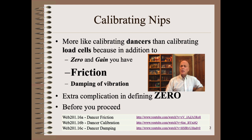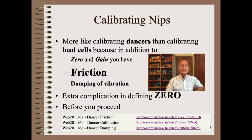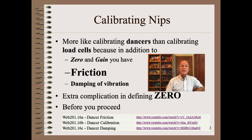Calibrating NIPs is more like calibrating dancers than calibrating load cells. The reason is that in addition to the complications of geometry, trigonometry and statics, which all engineers should know, we have friction coming from cylinders, slides and other parts. NIP friction is not small, even on the best designed systems. In some extreme cases, friction defines NIP loading more than does cylinder loading or assembly weight.